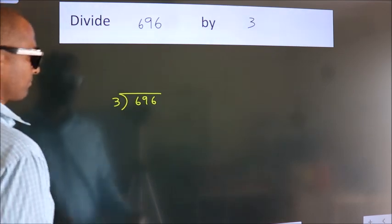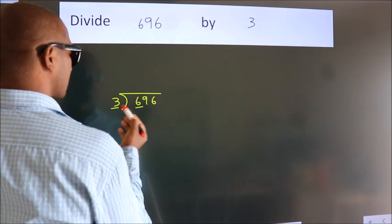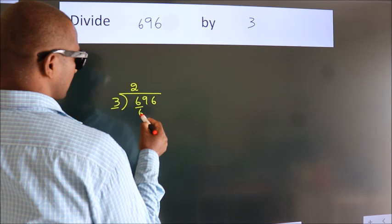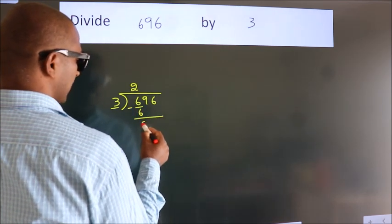Next. Here we have 6, here 3. When do we get 6? In 3 table, 3 twos, 6. Now, we should subtract. We get 0.